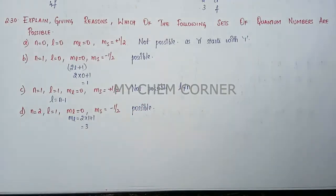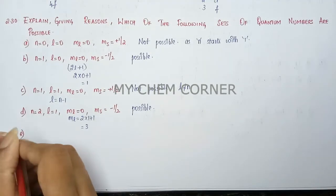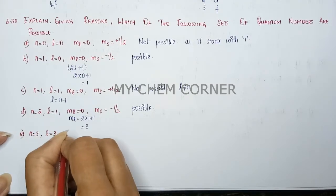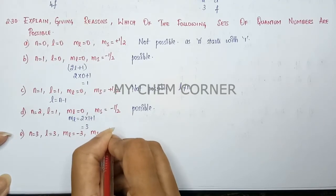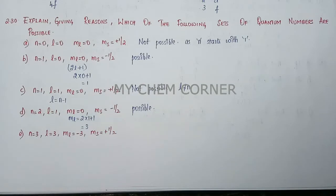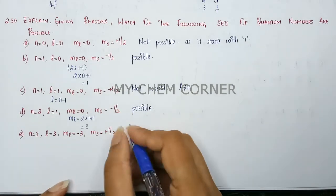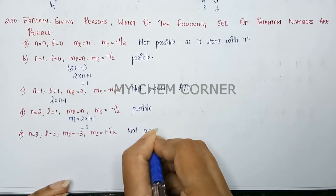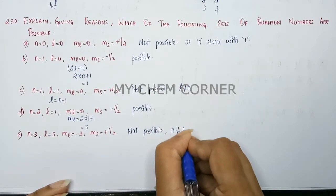The fifth one: n is equal to three, l is equal to three, ml is equal to minus three, and ms is equal to plus one half. Here it's clearly shown that you cannot have both n value and l value the same, so this one is clearly not possible.